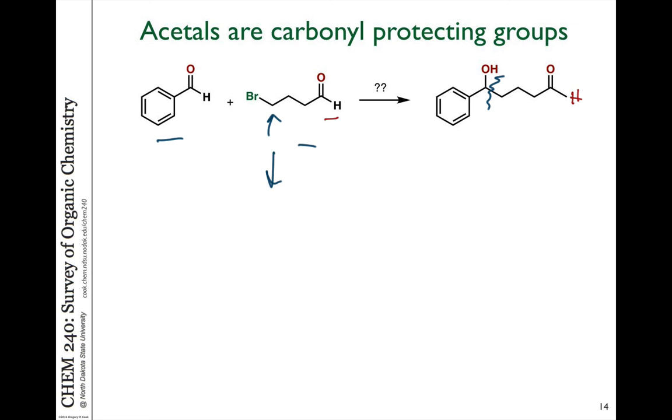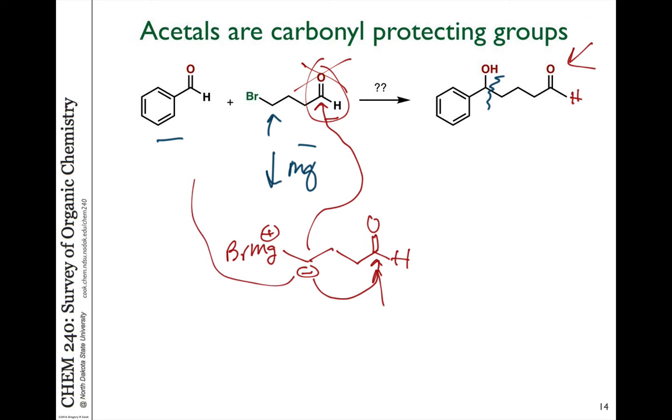So we can think about making a Grignard reagent with magnesium. That would generate a compound, which is a carbanion, which looks like this. So we basically have a negative charge there and a plus charge there. The problem is we have a reactive carbonyl within the molecule. It could undergo a cyclization reaction, or it could react with another molecule of this aldehyde. And that would be bad. We don't want that to happen because we want that in our product. We want this to react only with the aldehyde of the other starting material. So we need to protect this group.